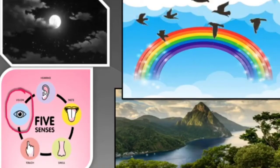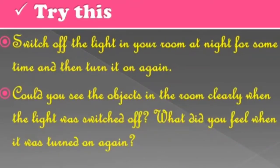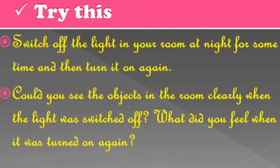Let us move towards the 'Try This' activity. Students, switch off the light in your room at night for some time and then turn it on again. Could you see the objects in the room clearly when the light was switched off? What did you feel when it was turned on again? From this activity, you will notice that there is some connection between the sense of vision and light. When we switch off the light at night, the objects in the room cannot be seen, and they can be seen as before when the light is switched on again.